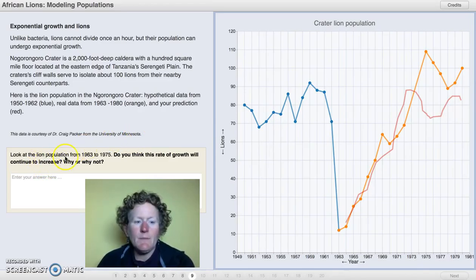Looking at the lion population from 1963 to 1975, the orange population, do you think this rate of growth will continue to increase? Why or why not? Think about this. It's growing really rapidly, will it continue to climb like this for another decade or two?